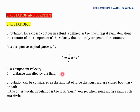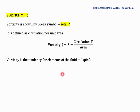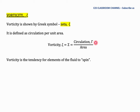In other words, circulation is the total push that you get when going along a path such as a circle. Vorticity is shown by the Greek symbol zeta. It is defined as circulation per unit area. Vorticity, or zeta, in some textbooks written as z, is equal to the value of circulation gamma divided by the area. Vorticity is the tendency of fluid elements to spin.